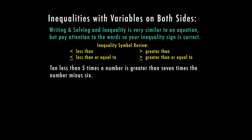So let's go ahead with this sentence here. We have: 10 less than five times a number is greater than seven times the number minus six. We want to break this down so that we have our inequality to go ahead and solve. First, I know that 10 less than means that I have the number 10 and that is going to be subtracted from something. Then I have five times a number and I don't know what that number is, so I'm going to represent that number with the letter A. And I know that five times A is going to be greater than.